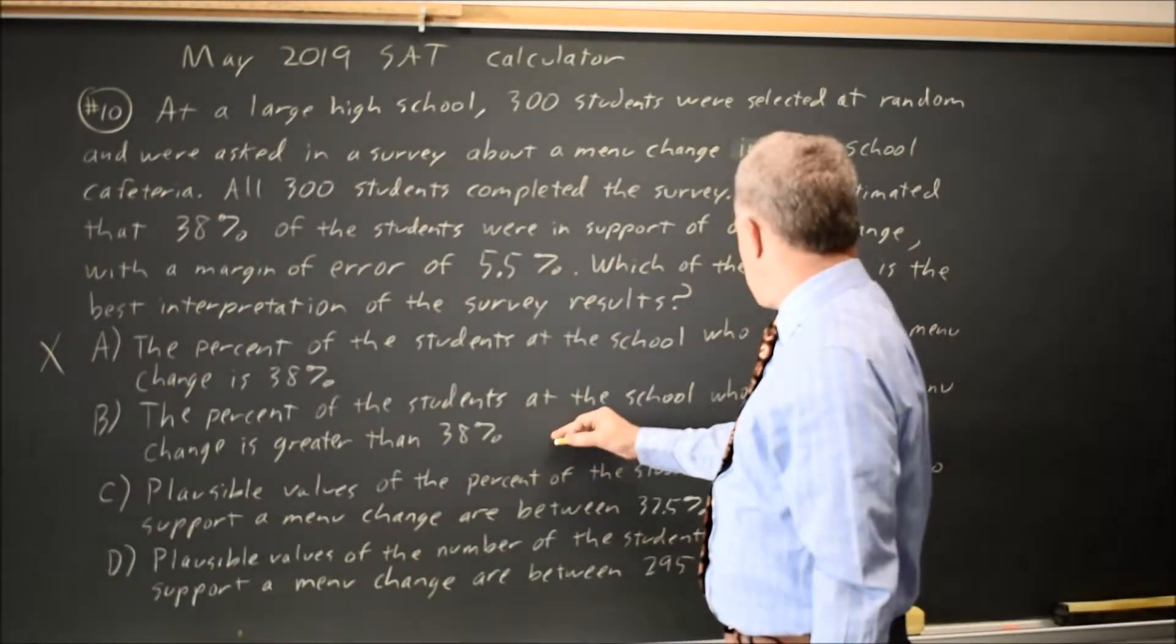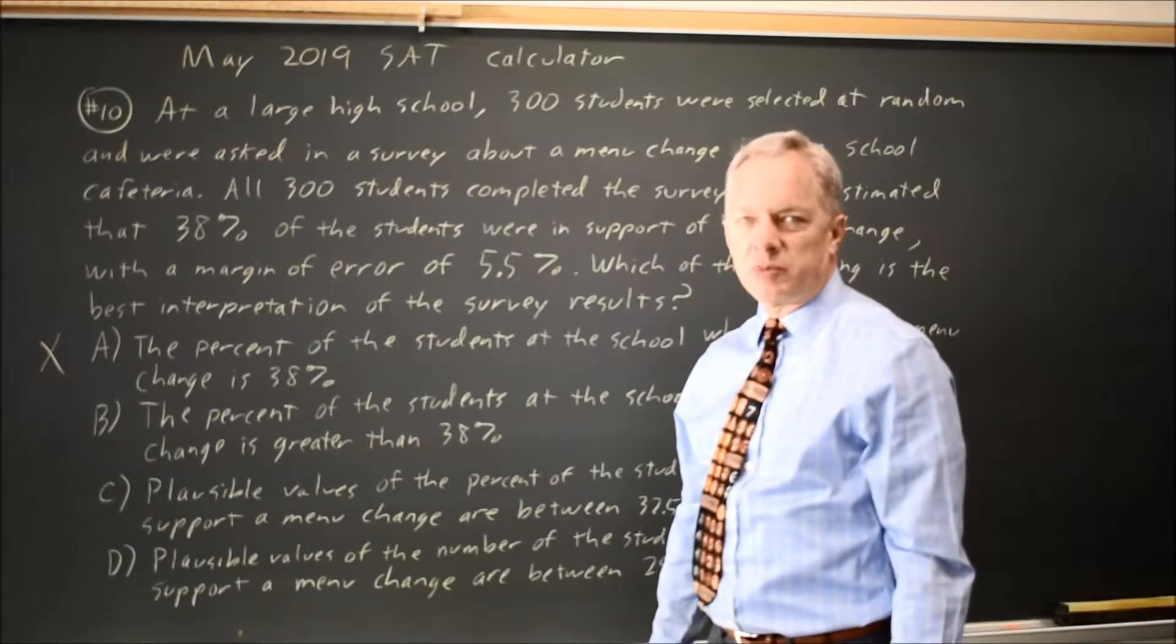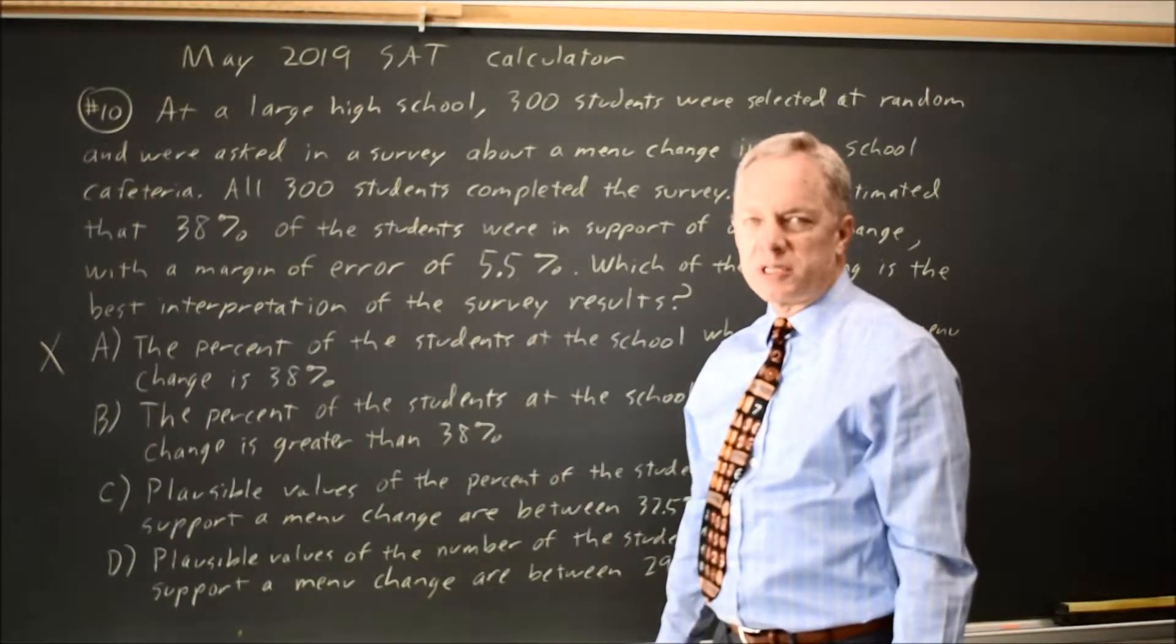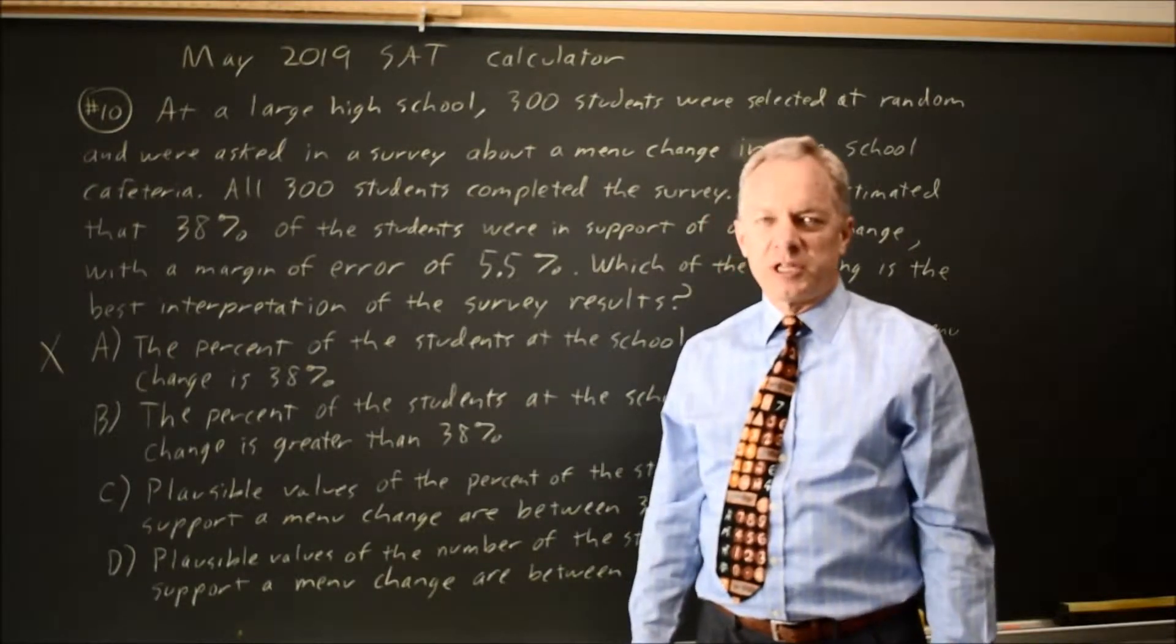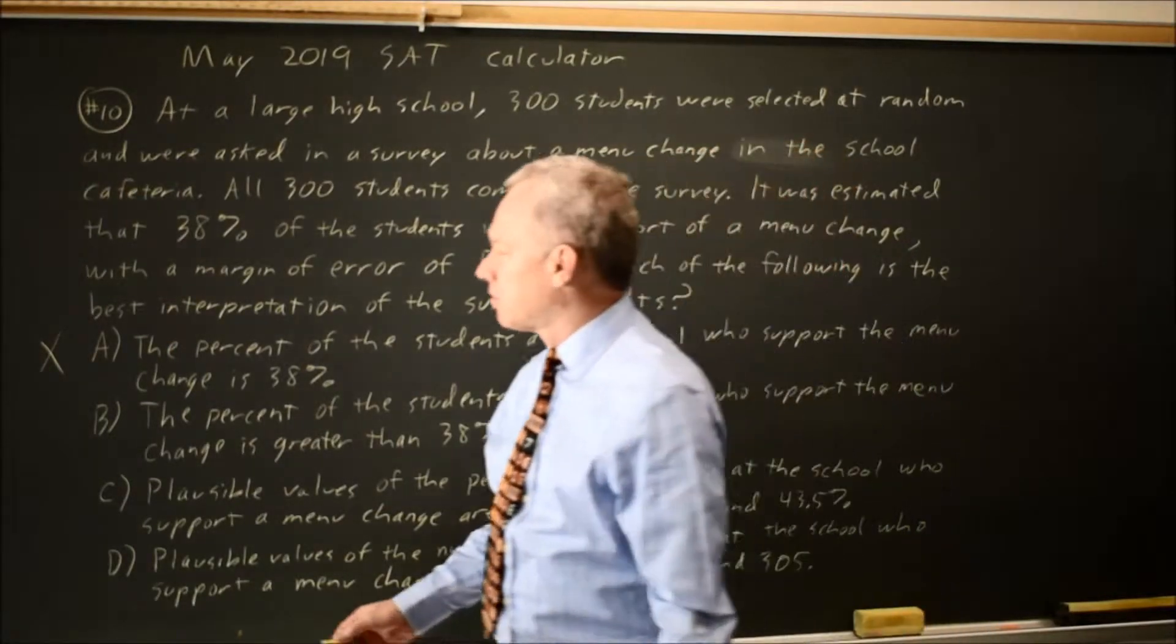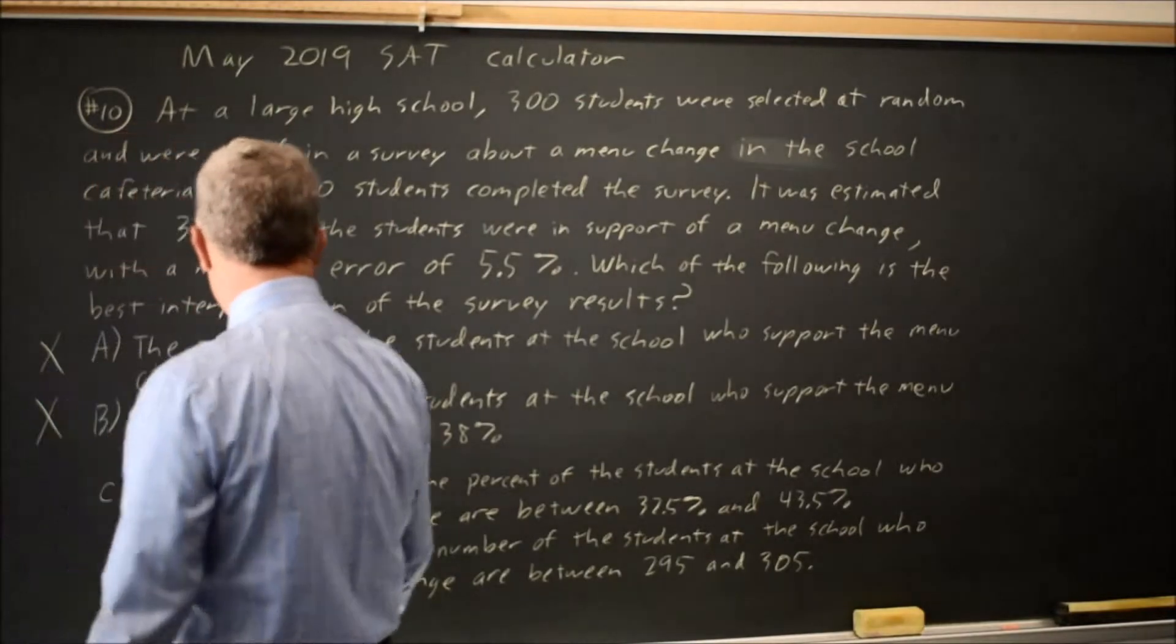Choice B: the percent of students at the school who support the menu change is greater than 38%. Since our best estimate is 38%, we're just as likely to underestimate as overestimate, and you can't assume that's a lower bound for the percent, so B is wrong.